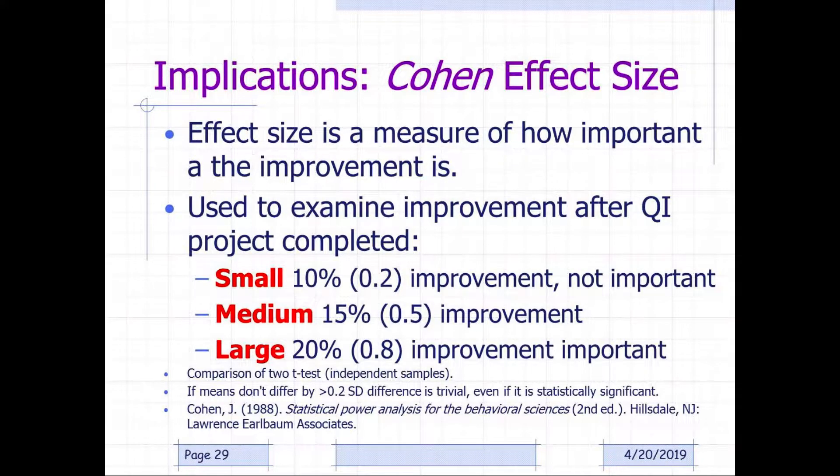You also need to look at the implications of effect size. It's a measure of how important an improvement is. It's used to determine the improvement after quality improvement projects are completed. A general rule of thumb is a small improvement is 10%, whereas medium is 15% and large is 20%. So it's basically a comparison of two t-test independent samples. If the means don't differ by greater than 0.2 standard deviations, the difference is trivial, even if it's statistically significant. This is commonly used in analyzing within quality improvement projects. We do this because we want to know how much of an effect a change has on the outcome.